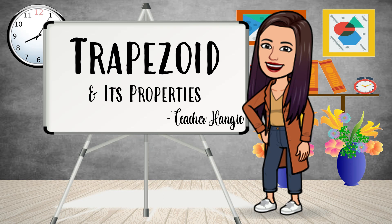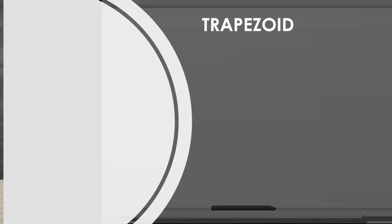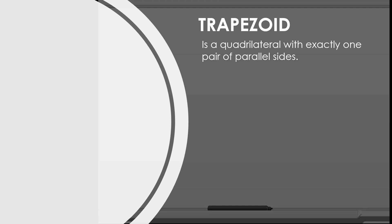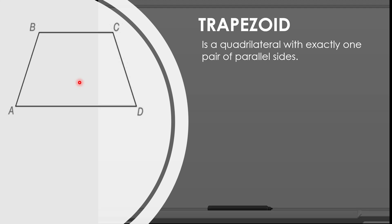First, let us define what is a trapezoid. A trapezoid is a quadrilateral with exactly one pair of parallel sides. Take a look at this figure — this one is an example of a trapezoid.